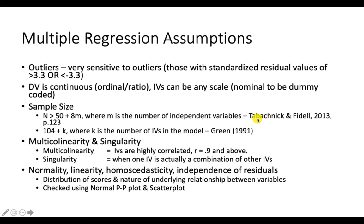Using Tabachnick and Fidell's 2013 formula, N equals 50 plus 8M, where M is the number of independent variables including mediator or moderator variables. For example, if you have two variables, 50 plus 8 multiplied by 2 equals 66 — that's your minimum sample size. According to Green, another formula is 104 plus K, where K is the number of IVs. With two IVs, that gives you 106. You can also use Cohen's power primer or G*Power.